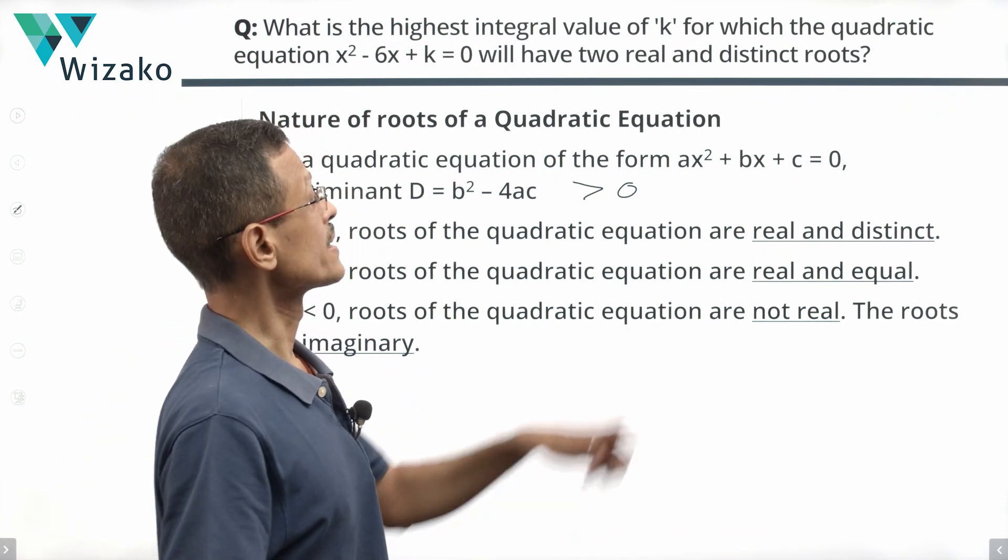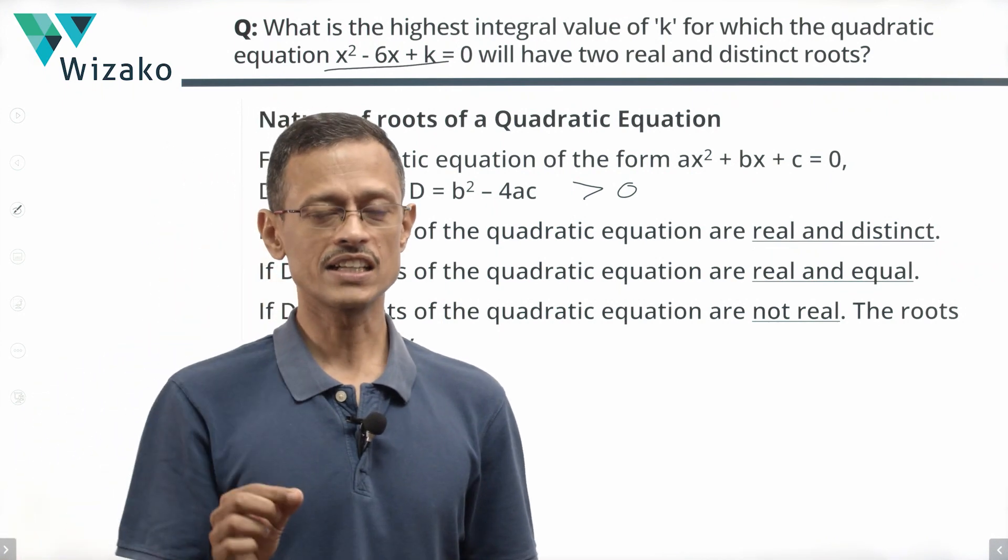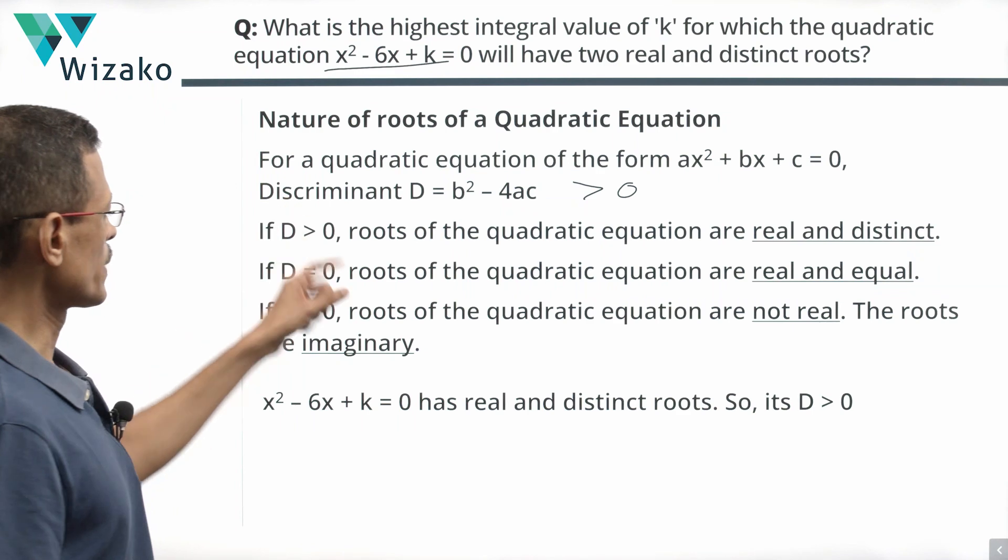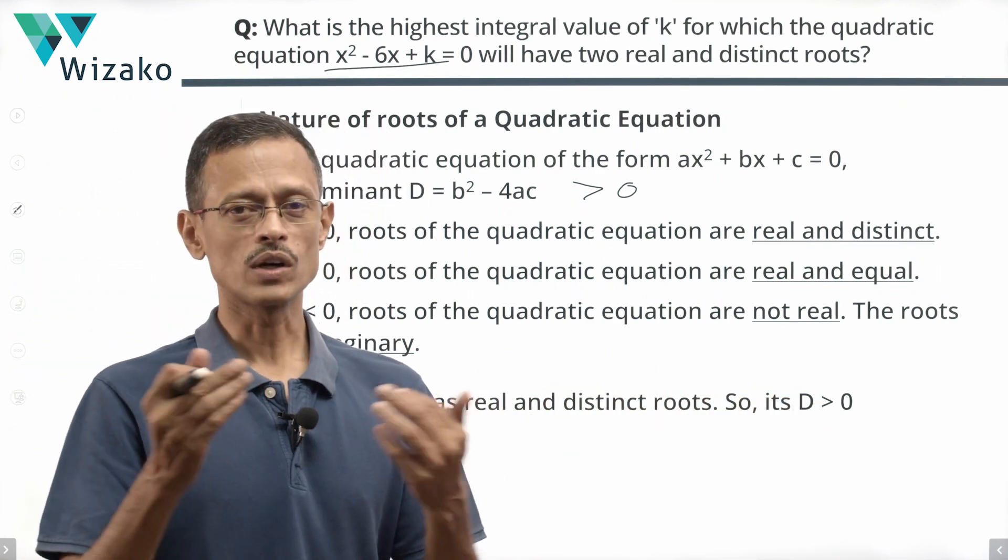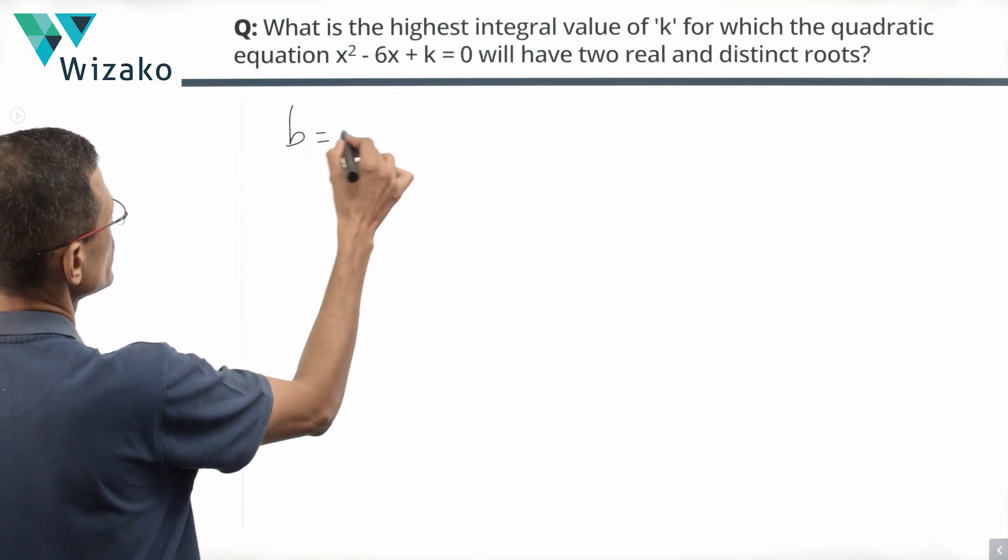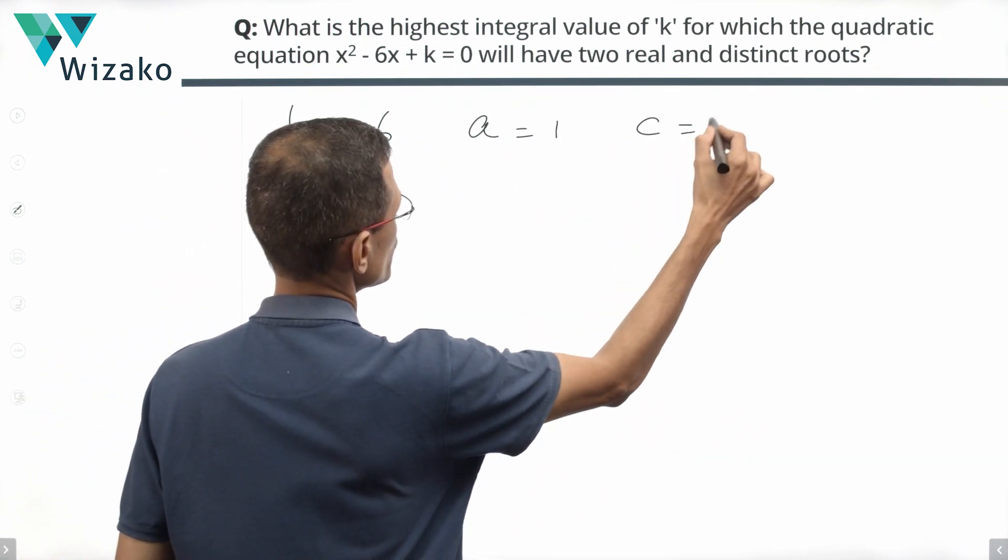What is told to us is that this particular equation, x² minus 6x plus k equals 0, has real and distinct roots, which essentially means that the discriminant of this equation is greater than 0. So, first step, let's find out what the discriminant is. The discriminant is b² minus 4ac. For this equation, b is equal to minus 6, a is equal to 1 and c is equal to k.